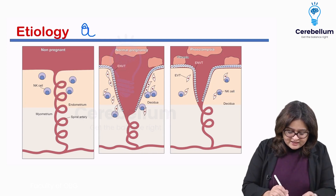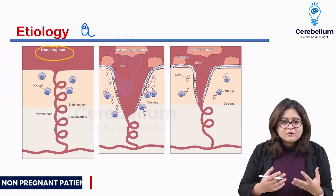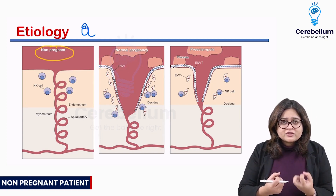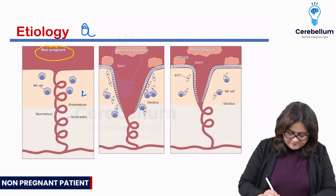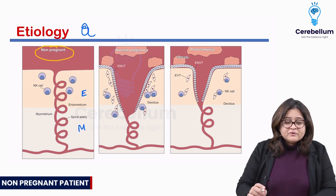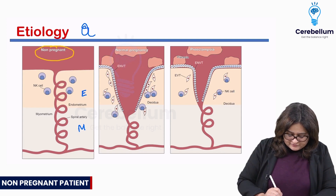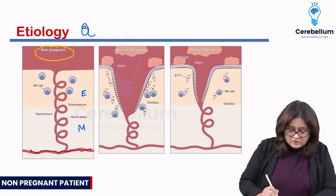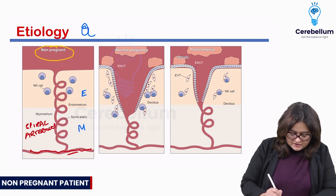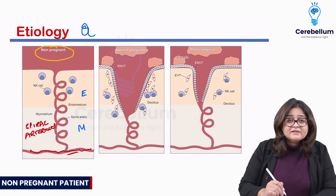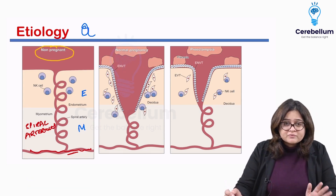The first image is that of a non-pregnant patient. This is how the vasculature in the uterus looks like in a non-pregnant patient. Here you have the endometrium and here you have the myometrium. You have the branches of the uterine artery here, and here you have the spiral arterioles coming from this artery.